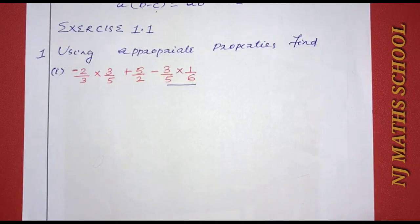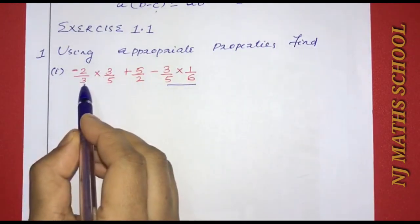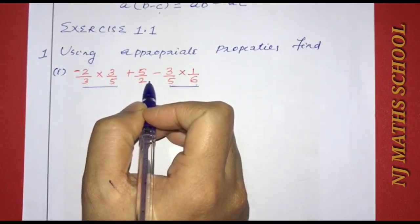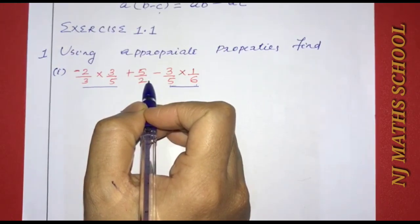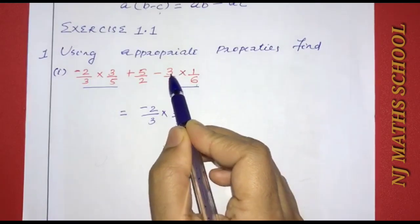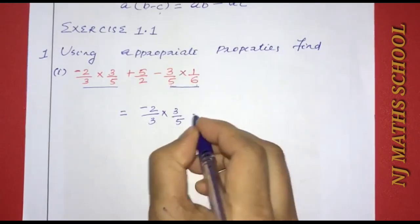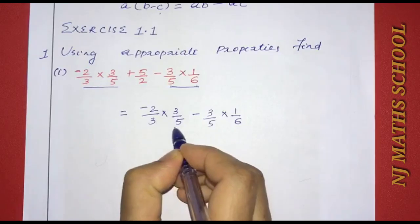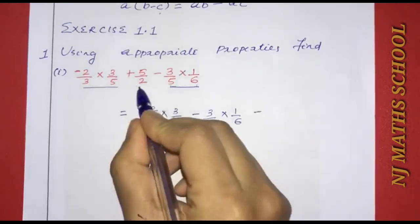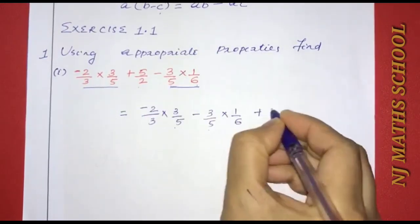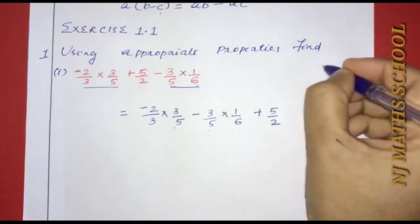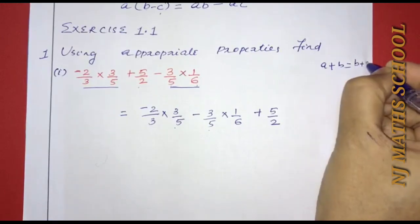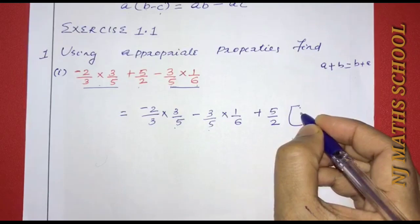We look at the terms: minus 3 by 5 into 1 by 6, and minus 2 by 3 into 3 by 5. The term 3 by 5 is common in both terms. Using the commutative property, A plus B equals B plus A, we rearrange the terms.